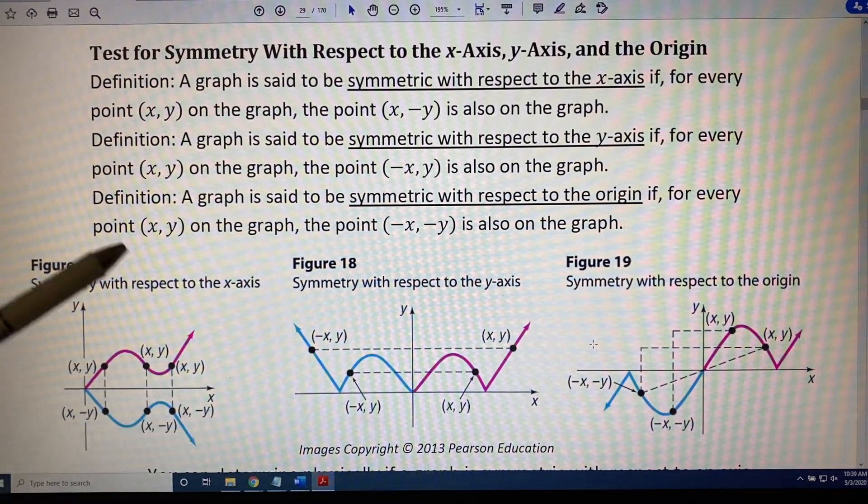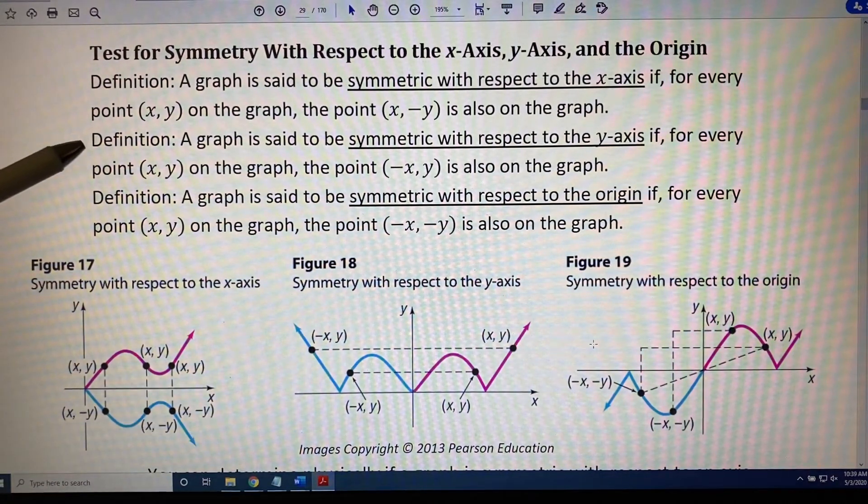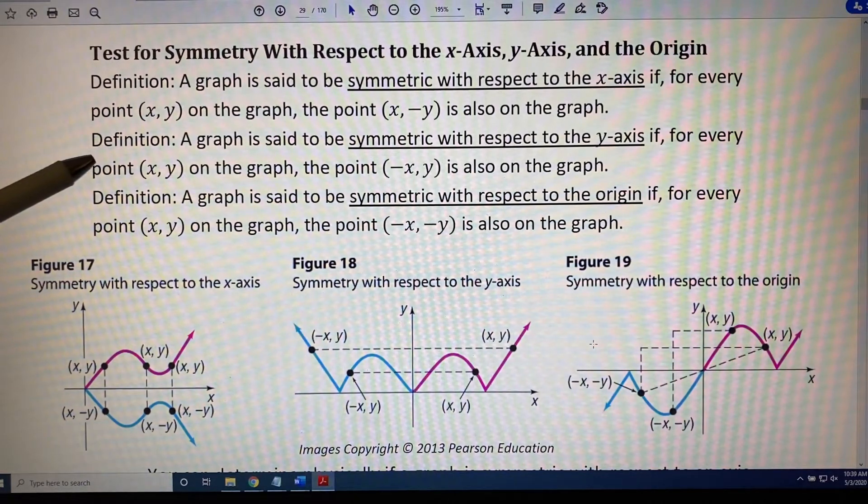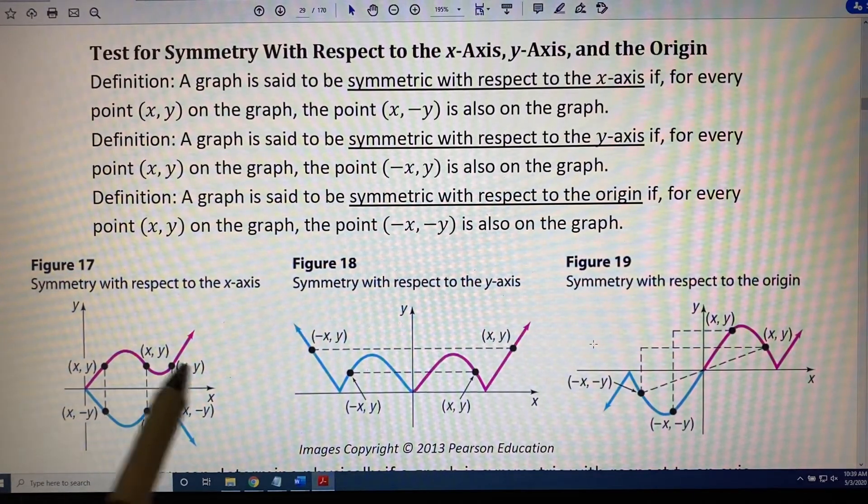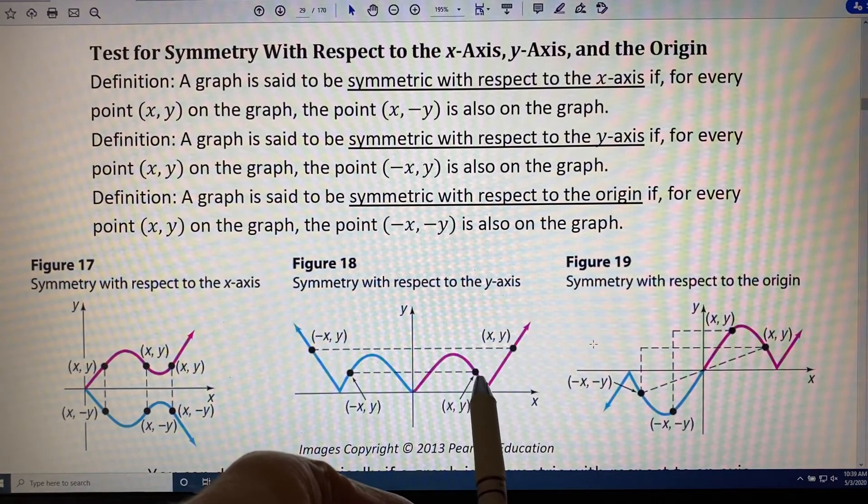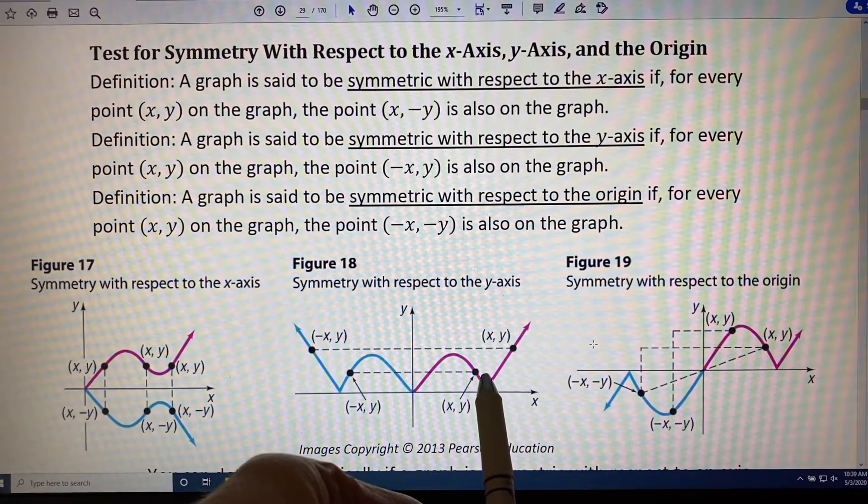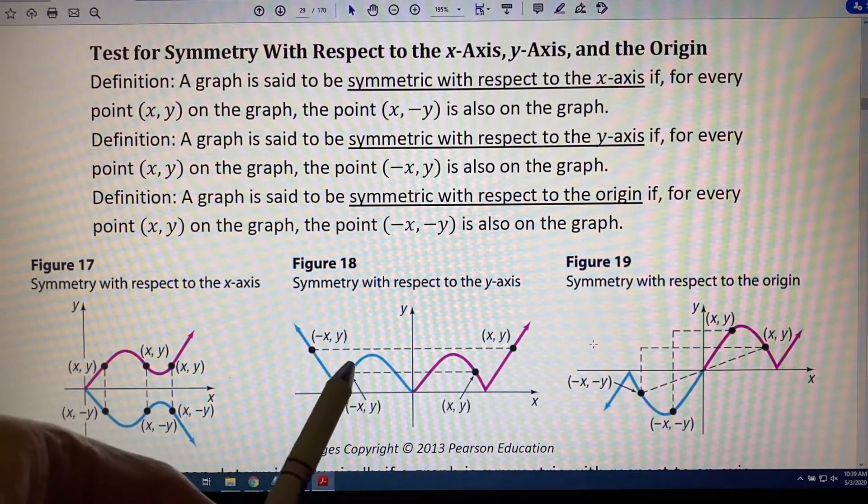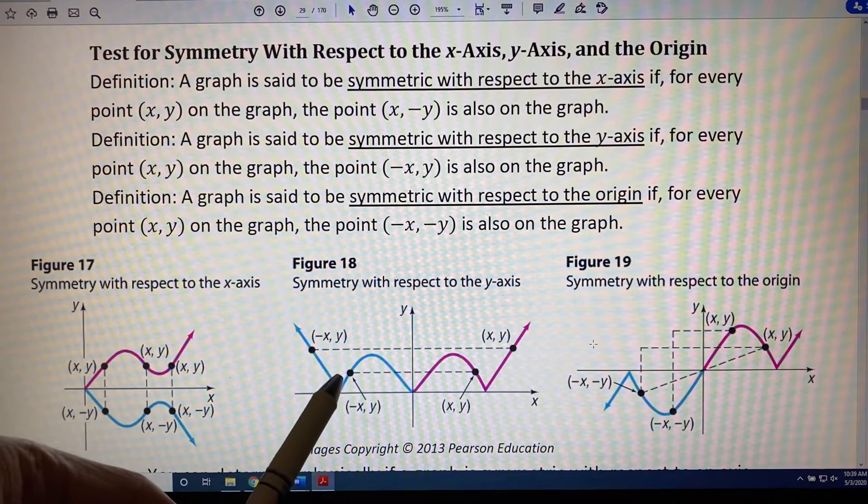The second definition goes with figure 18. A graph is said to be symmetric with respect to the y-axis if, for every point x, y on the graph, the point negative x, y is also on the graph.